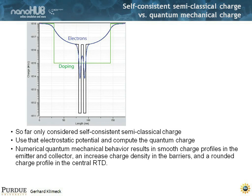So if you took that resulting potential and did a one-pass quantum calculation on top of that — just to see how charge would really look like in this potential — what you find is that the charge would be rounded. You wouldn't have that sharp edge. You would have charge in the barriers because there's tunneling. And you would have rounded charge in the middle. The charge would be less than the quantum charge because that resonance is way up in energy — it's not occupied, it's virtually empty. Versus in a classical calculation there's no energy quantization; it just looks at the Fermi level and the band edge and puts classical charge there.